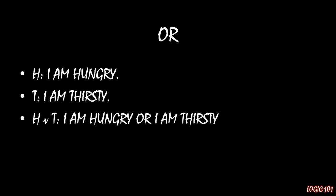OR is pretty straightforward. You take two simple sentences — for example, H: 'I am hungry,' and T: 'I am thirsty' — and you put a wedge or a V in between those. H∨T gives you 'I am hungry or I am thirsty.'